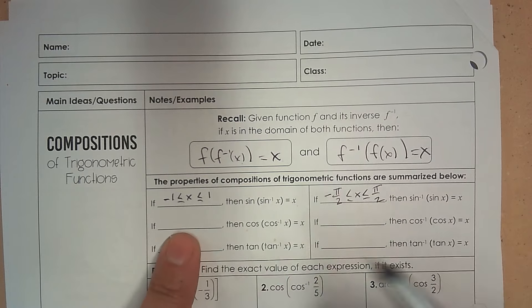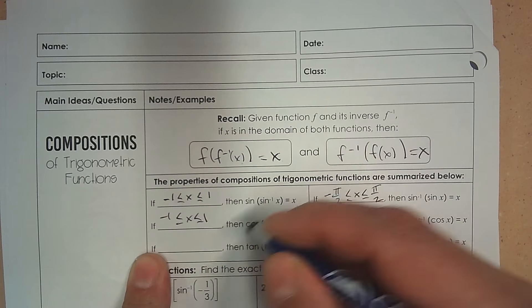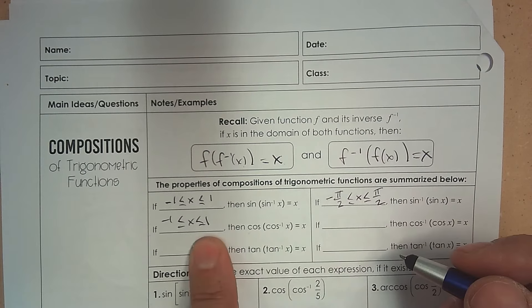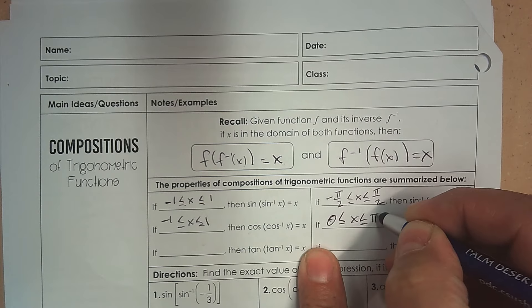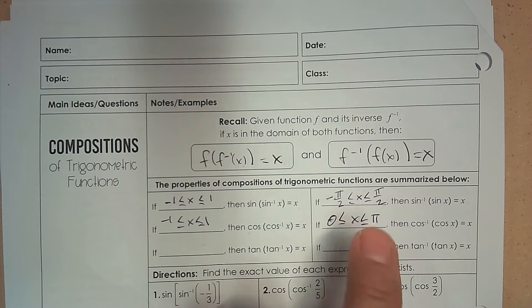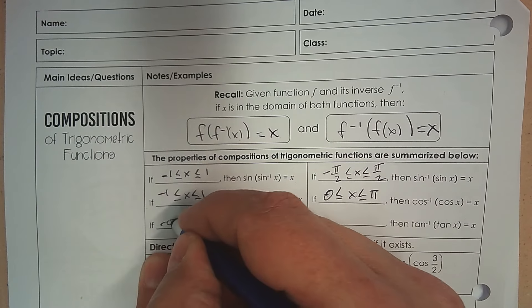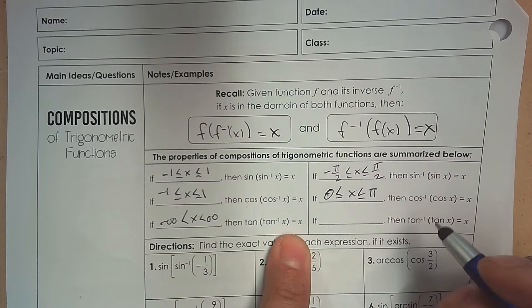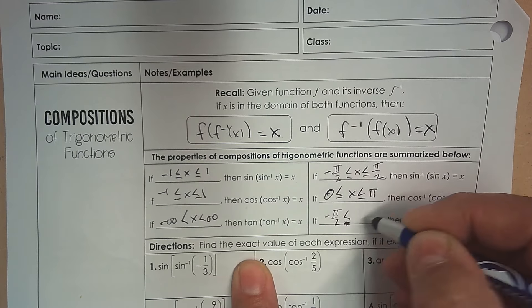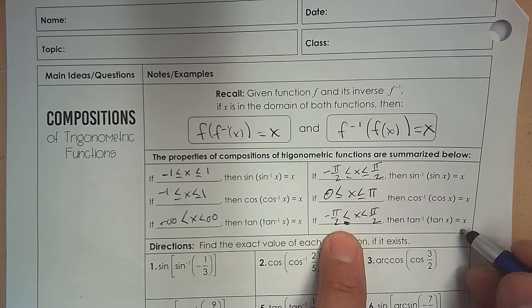For cosine, same idea: the value must be between negative 1 and positive 1, then they cross out and the answer is what's inside. The angle goes from 0 to pi. For tangent, it goes everywhere — from negative infinity to infinity — so they always undo each other. For the angle restriction, there's no equal sign, just an open interval arrow. The big idea is that a function and its inverse undo each other.